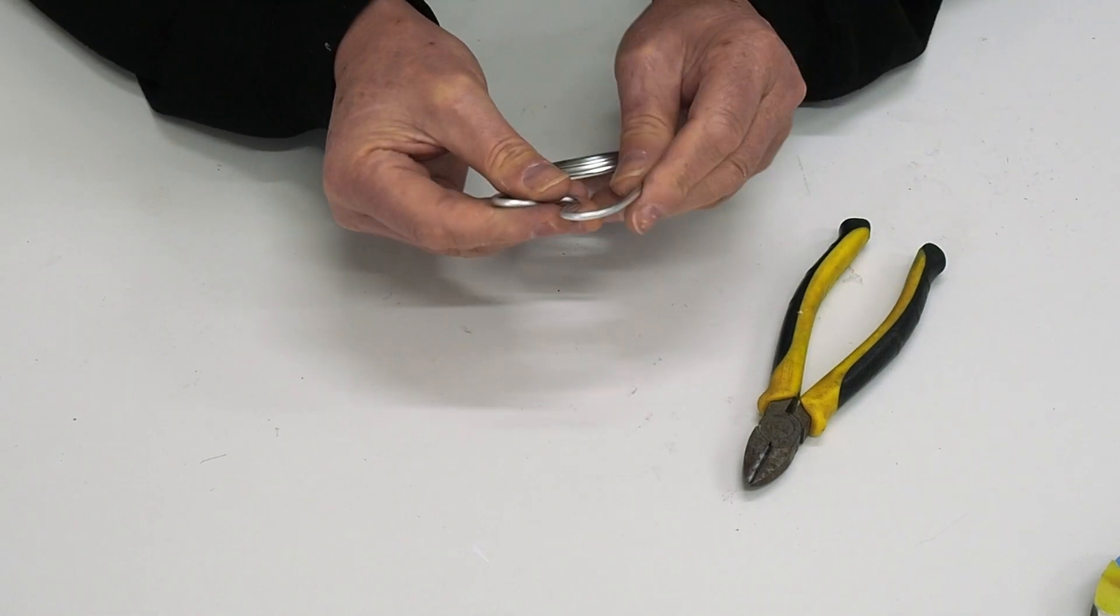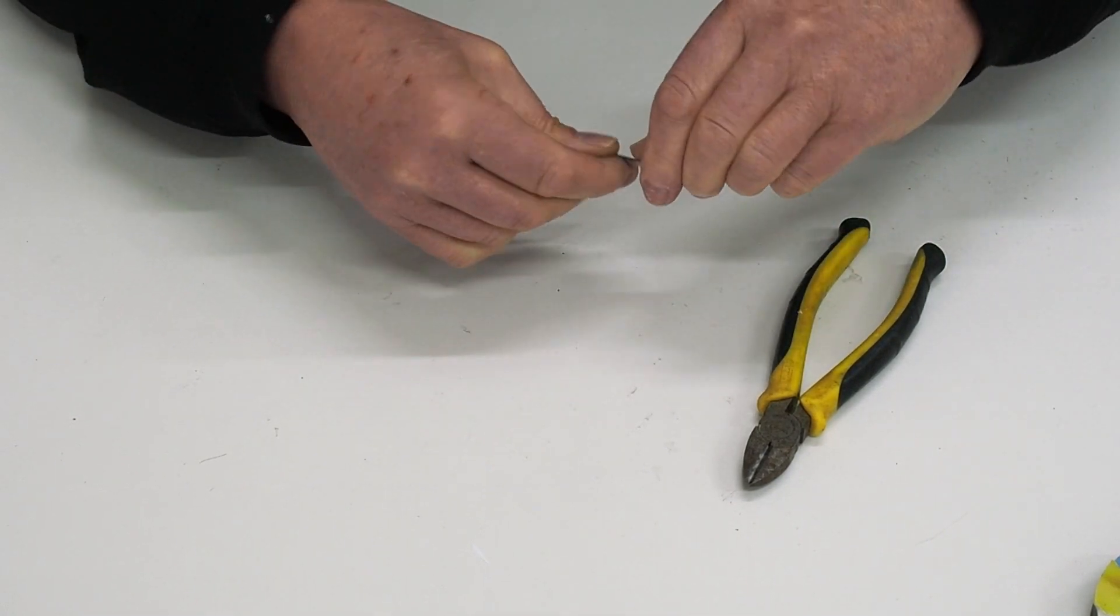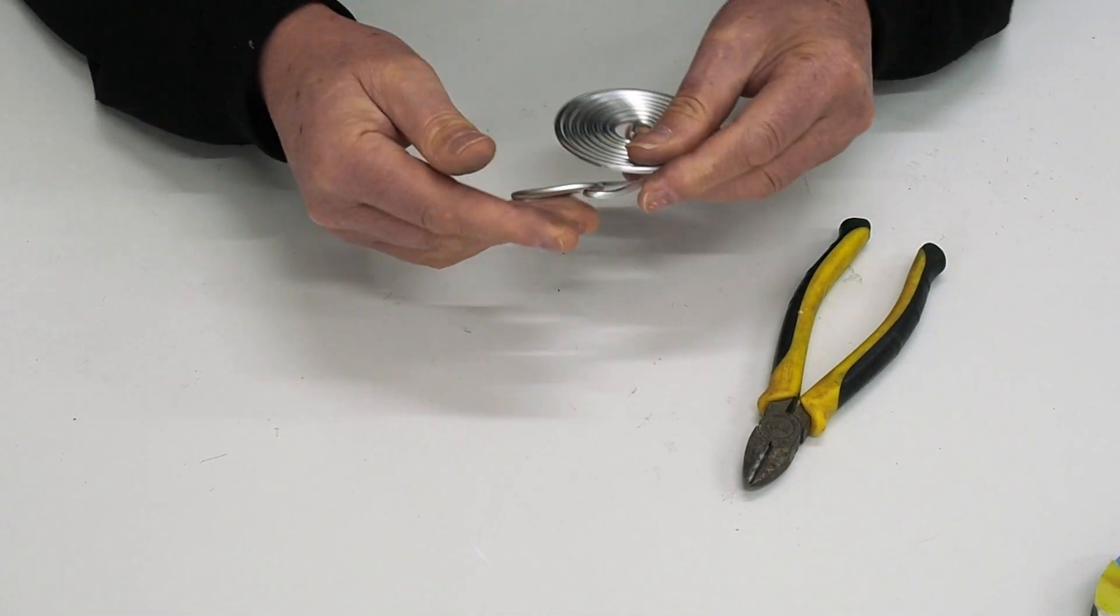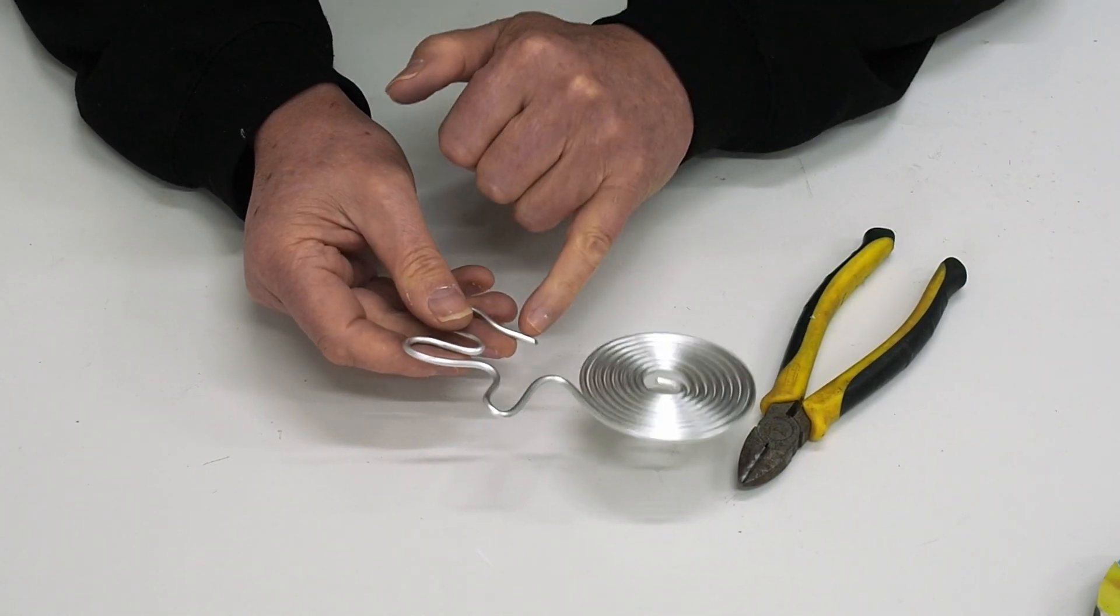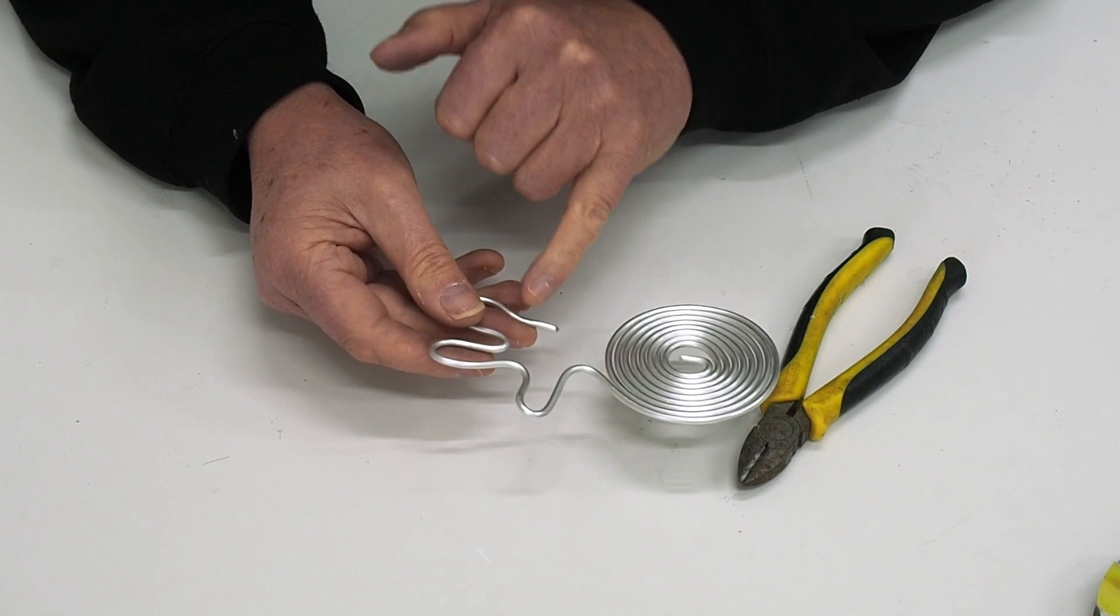Then I just use my fingers and manipulate it to the style that I'm actually after and also the size. When you're doing this, you just need to think about where the join is because this is going to be important.